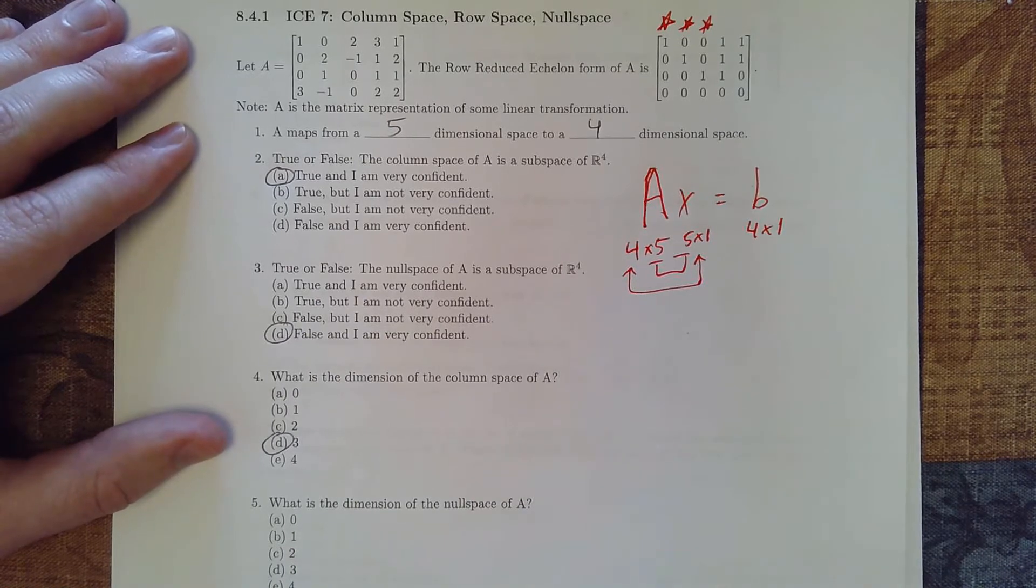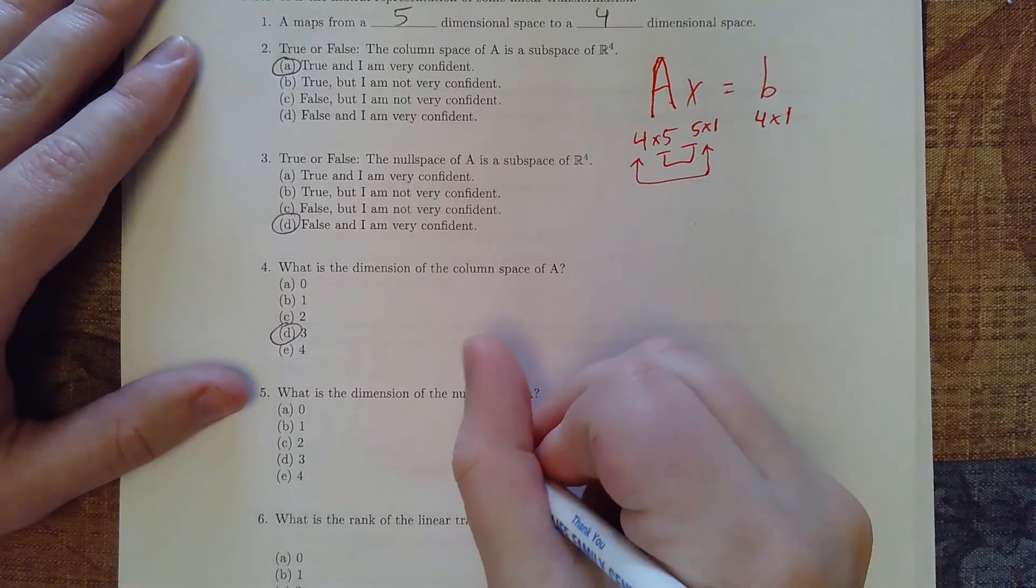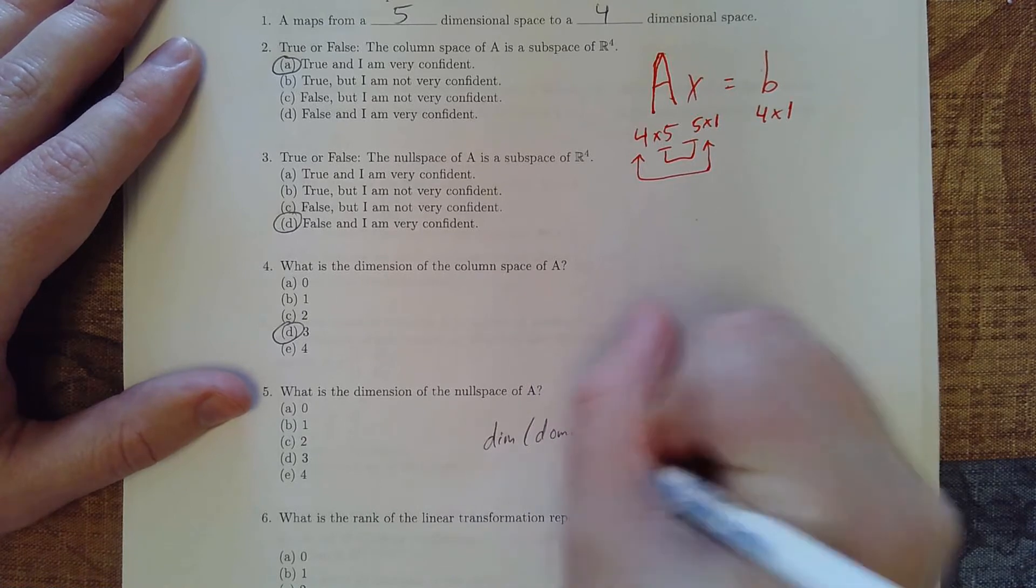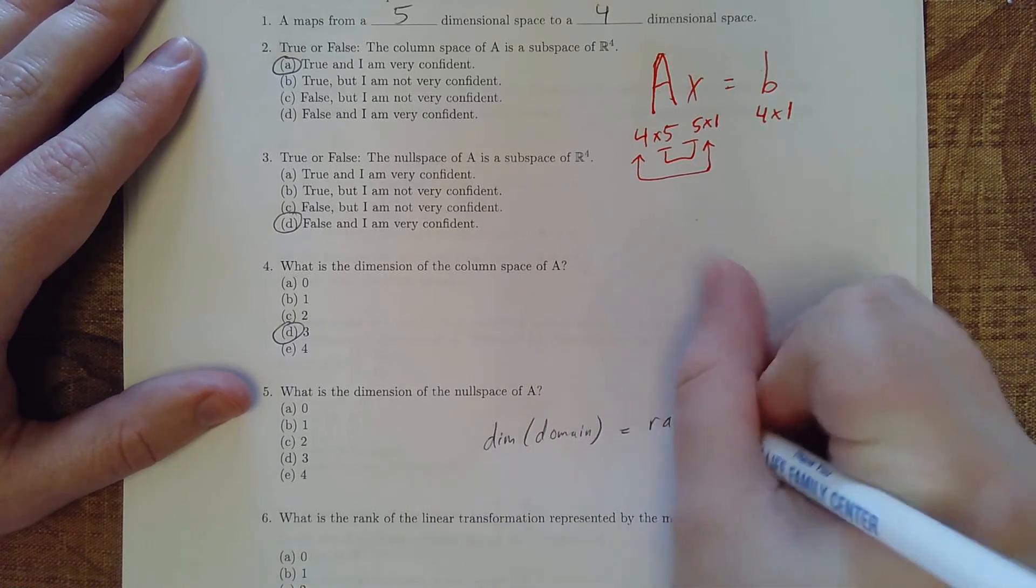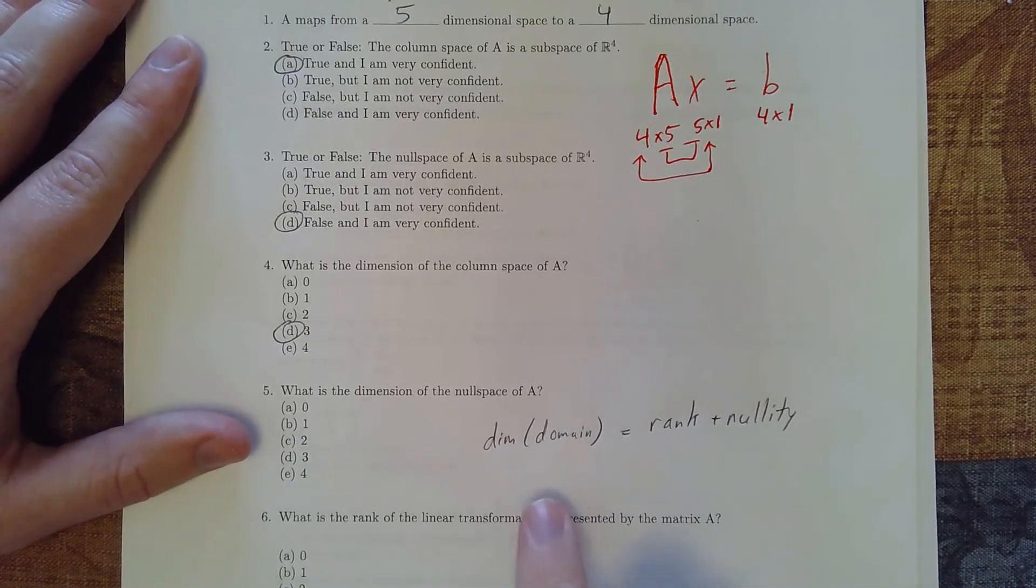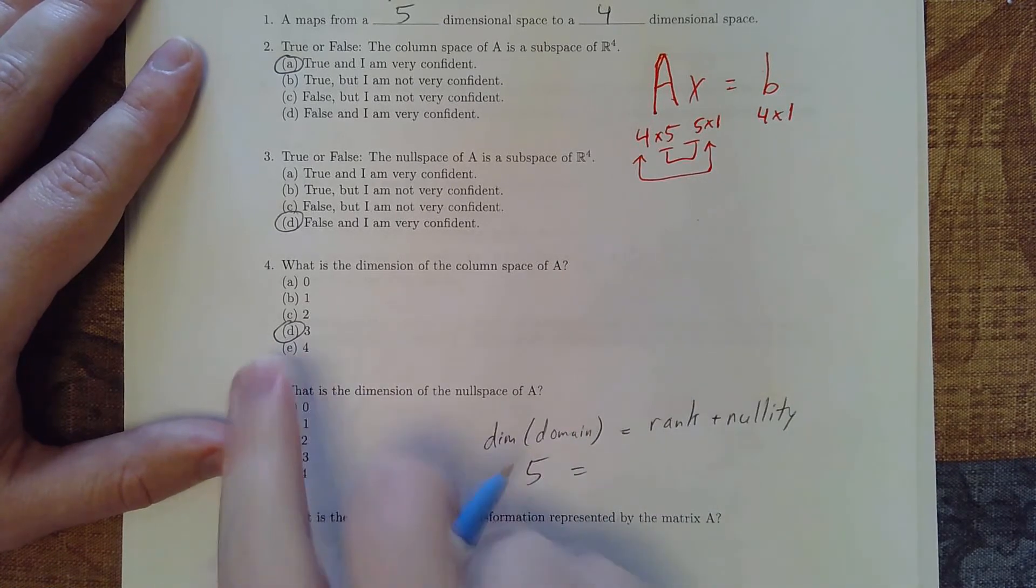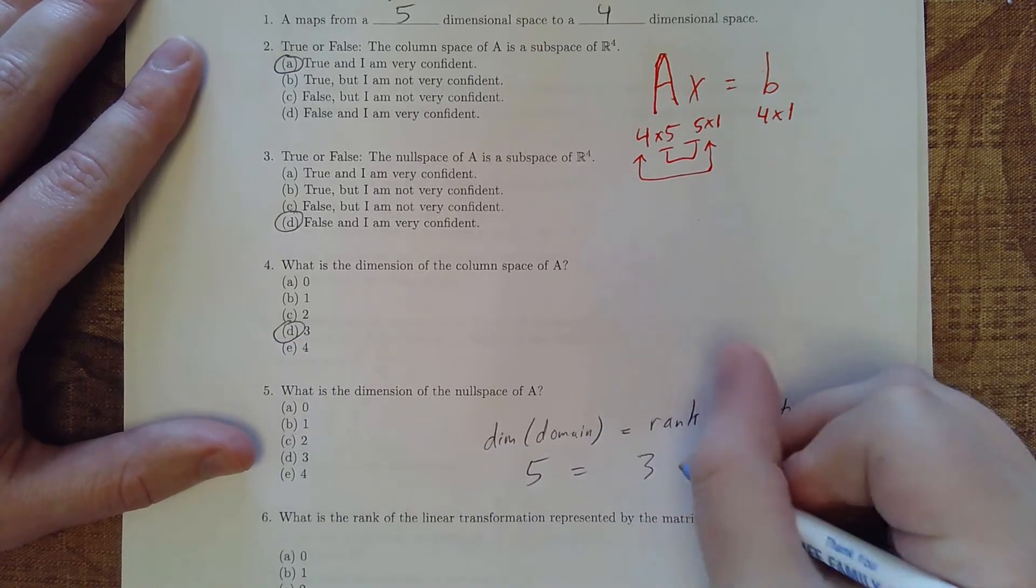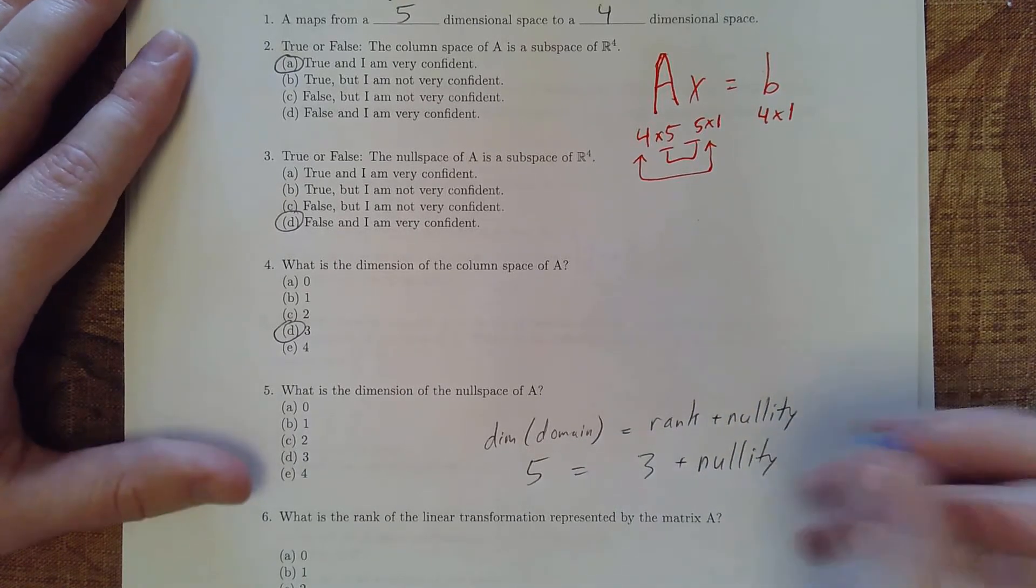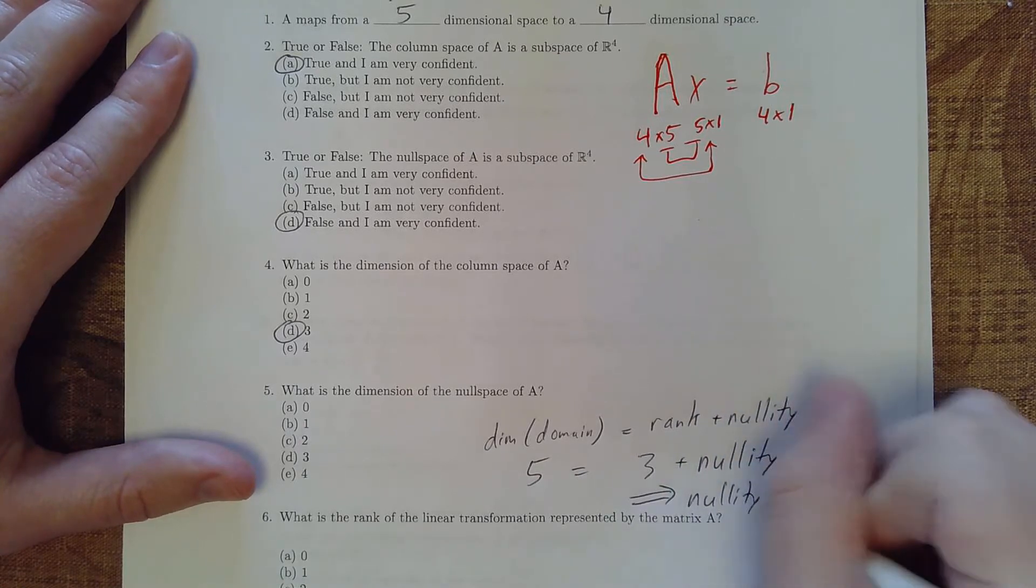Now what this is false is the dimension of the null space. But what we do have is the rank nullity theorem, which says the dimension of the domain equals the rank plus nullity. Now what we do know is that the domain is five-dimensional and the rank we just said was three-dimensional. So if we want to take three plus the nullity and that equals five, what that's going to tell us is that the nullity equals two.